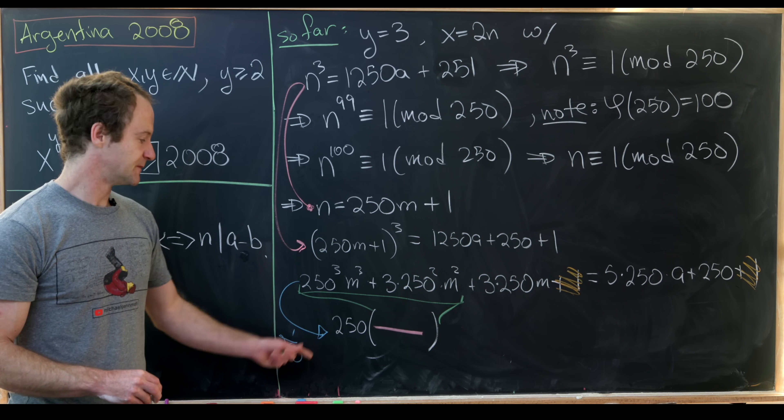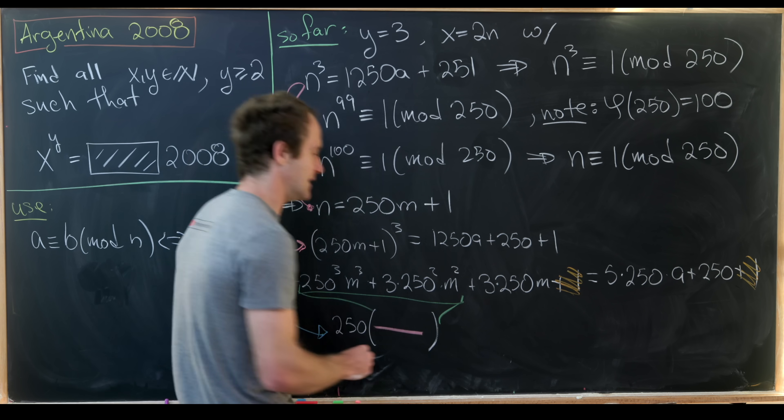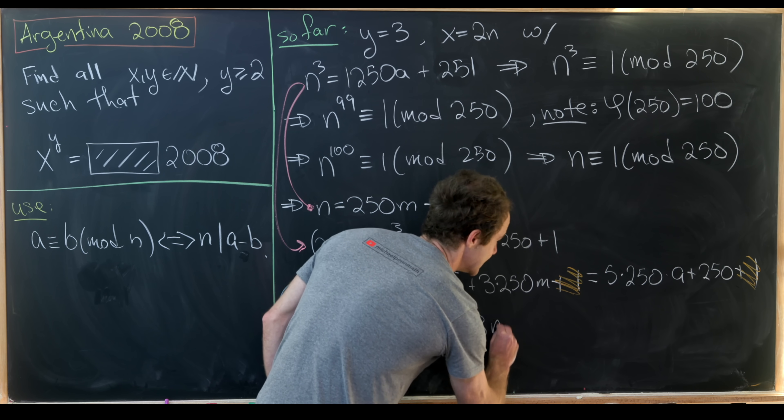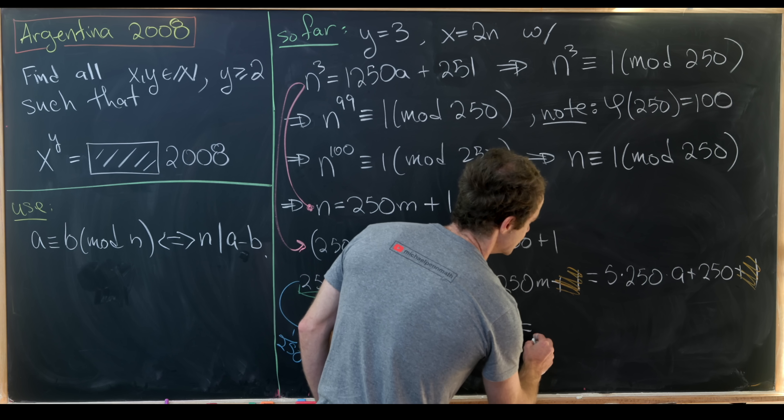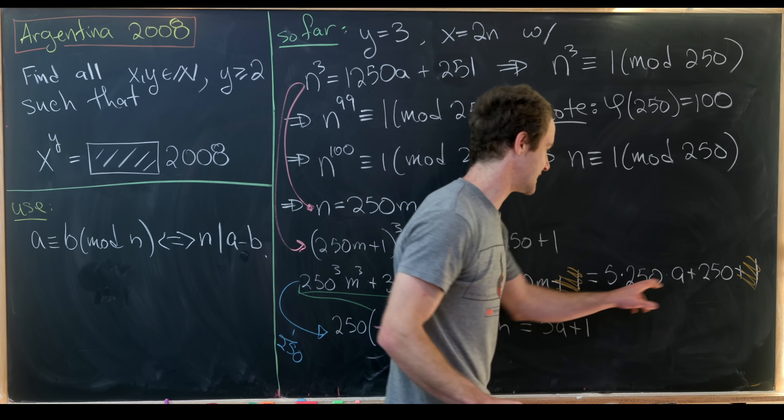So notice if I divide all of the stuff which I've underlined in green by 250, it's still a multiple of 250, so I can factor that 250 out.